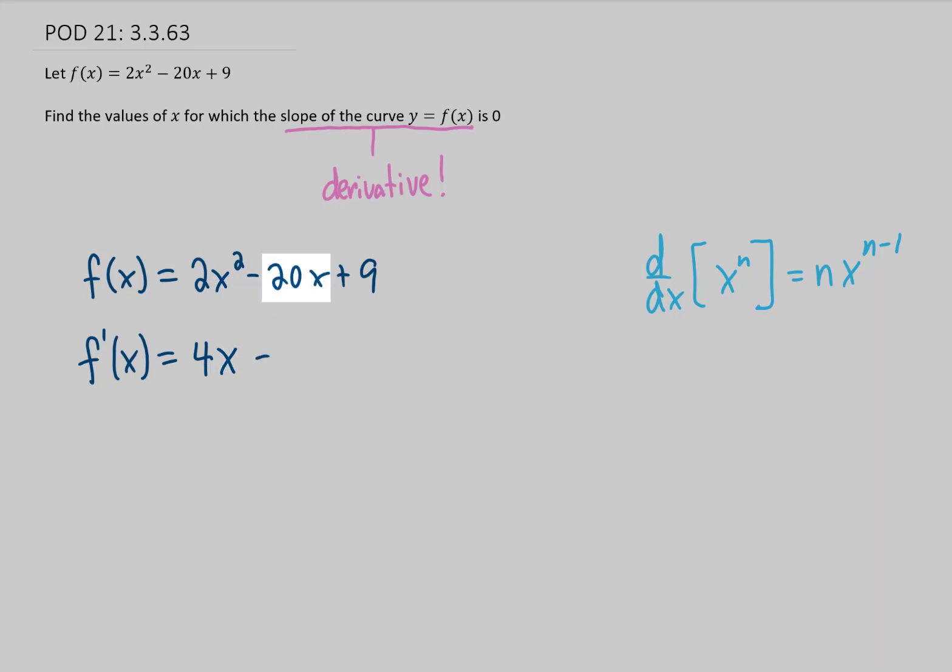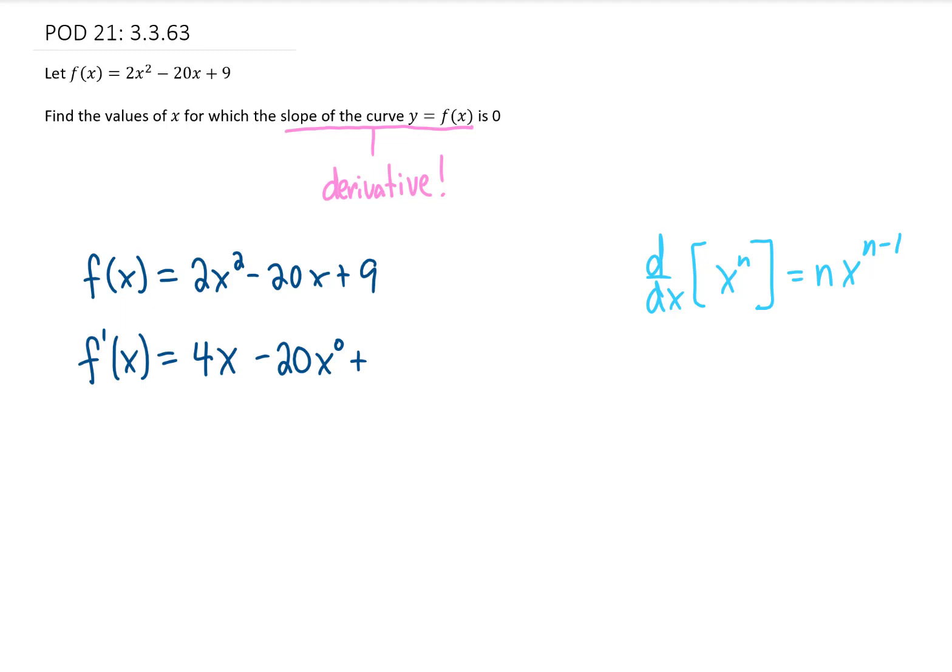Next term, we have 20x or 20x to the first power. We multiply that 20 by that first power, which just gives us 20. Then we reduce that power of 1 to a 0, and we're finished. For the last term, the derivative of 9 is simply 0 because the derivative of any constant is 0.